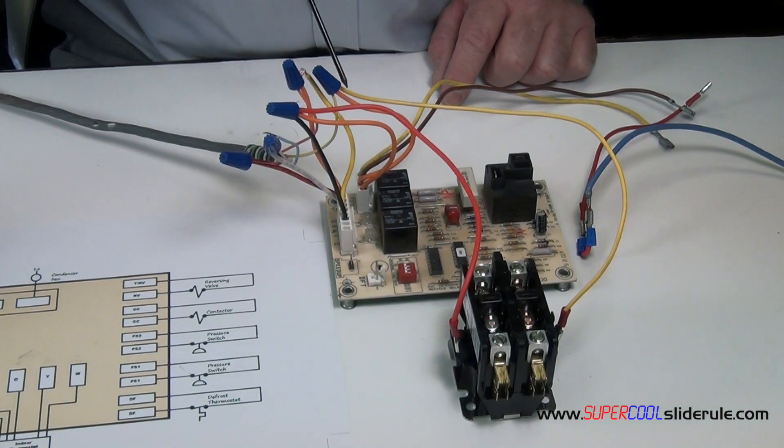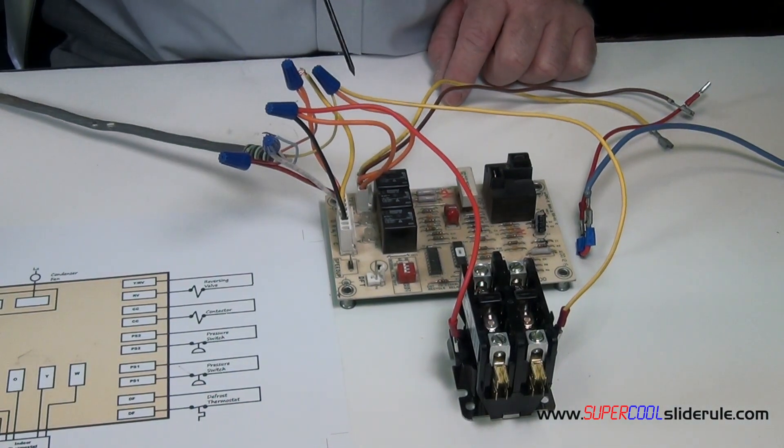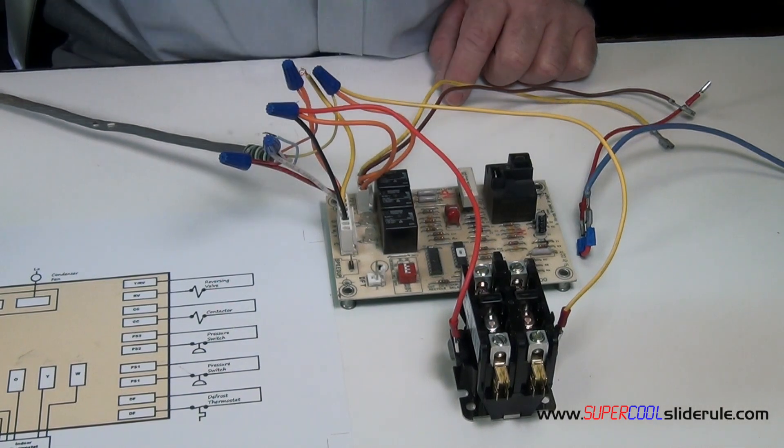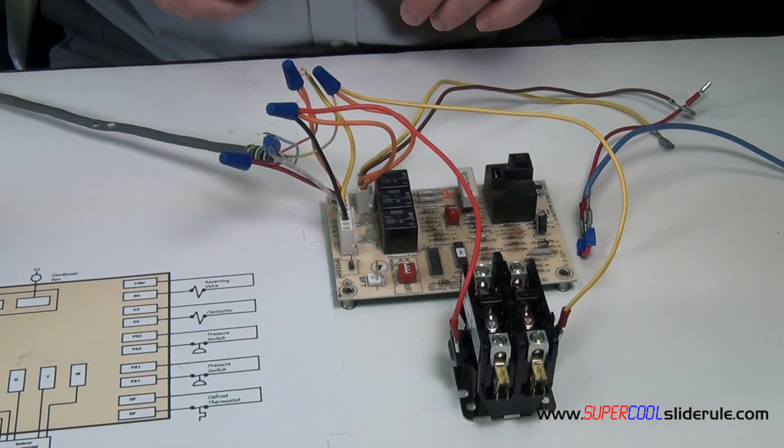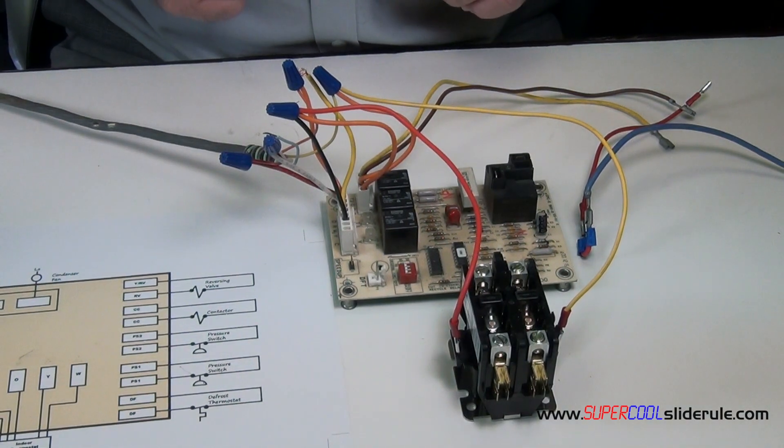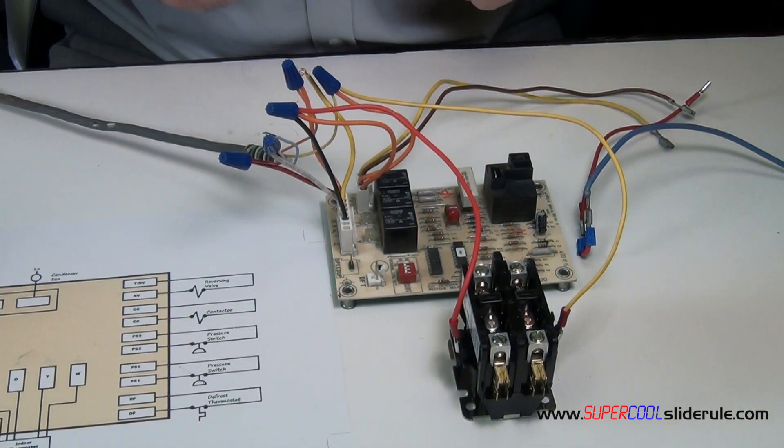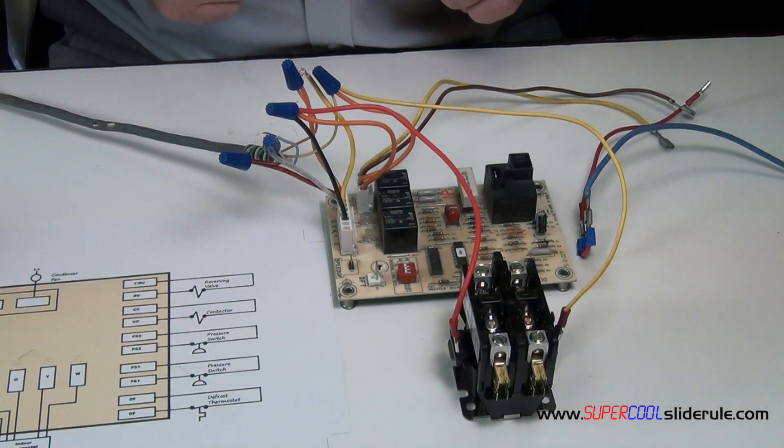That's all we have to do, just a contactor, reversing valve, and condenser fan. This concludes our tutorial. Thank you for watching. Please stay tuned while I introduce the super cool slide rule. It is the coolest tool in air conditioning, guaranteed to save you a lot of money by saving you a lot of time.